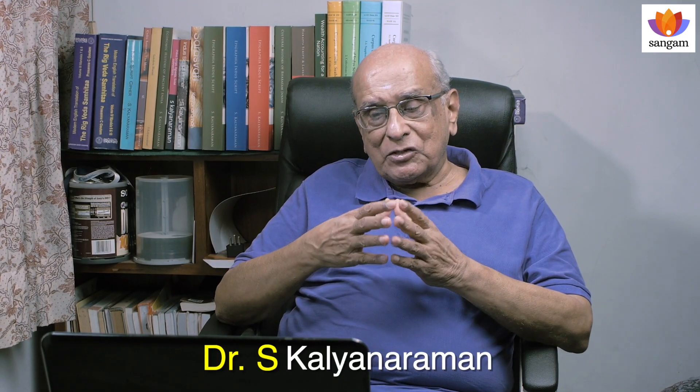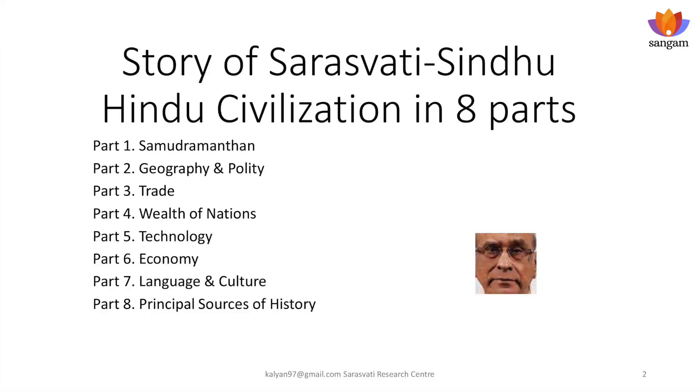Naskaram. We have seen so far in the narration of the story of Saraswati-Sindhu Hindu civilization eight topics. The topics covered are Amudra Manthanum, Geography and Polity, Trade, Wealth of Nations, Technology, Economy, and Language and Culture. The last segment takes a look at all seven topics and suggests that the principal sources of history are available to us today for narrating the history of the civilization from the 7th millennium before the Common Era.